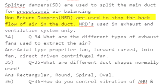Q36: How do you control vibration of AHUs and chillers? Answer: Spring vibration isolators, rubber pads, kinetic chain, flexible bellows. Q37: What is the difference between VAV and CAV? Answer: Variable Air Volume and Constant Air Volume.